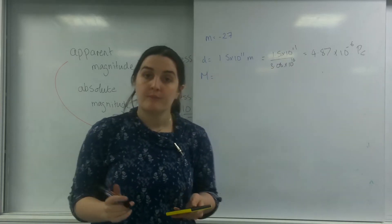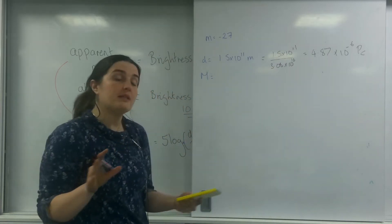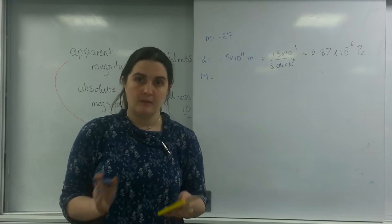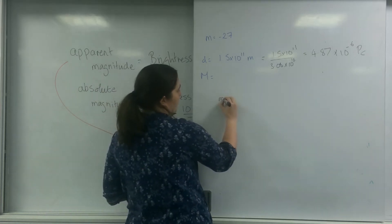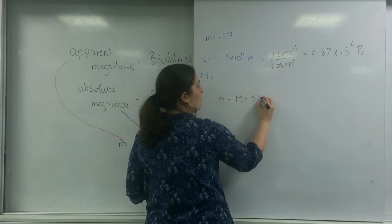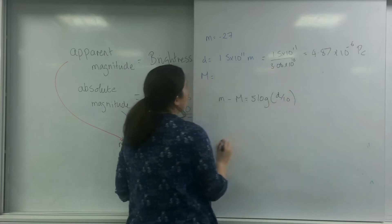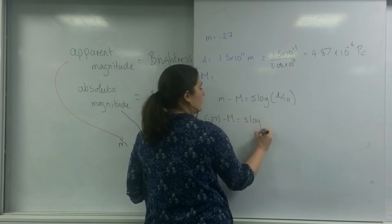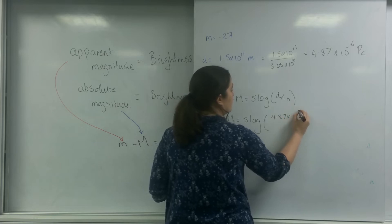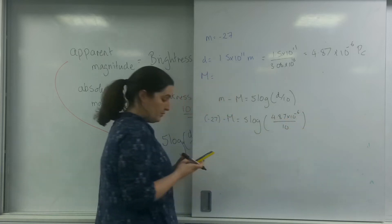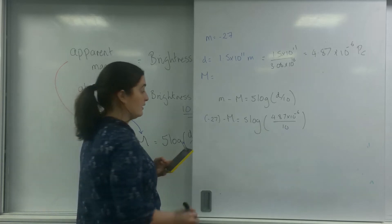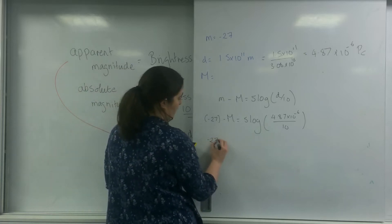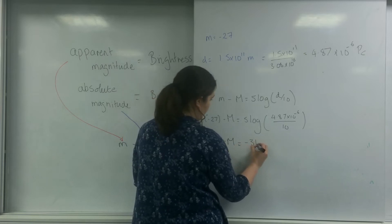Yes, it's small. It's really close. So I'm going to put it into the formula. Little hint: I always put the numbers for apparent and absolute magnitude in brackets. It makes it much easier, trust me. So the formula is m minus big M is 5 log d over 10. So minus 27 minus big M is 5 log 4.87 times 10 to the minus 6 over 10. So I'm going to divide that by 10. I'm going to log to the base 10 of that answer. I'm going to times that by 5. So I have minus 27 minus M is minus 31.56.